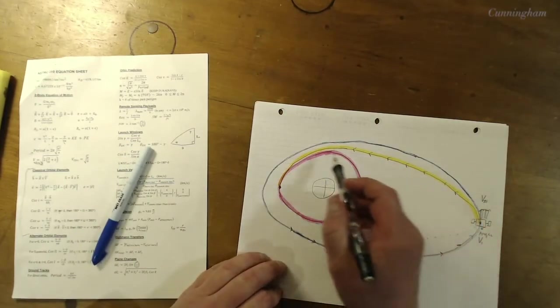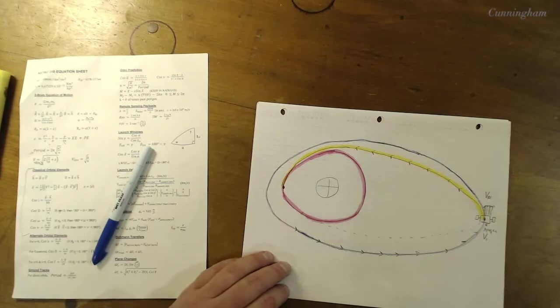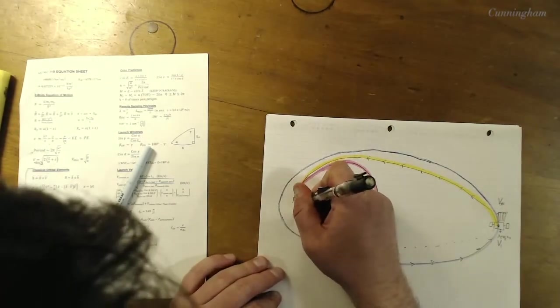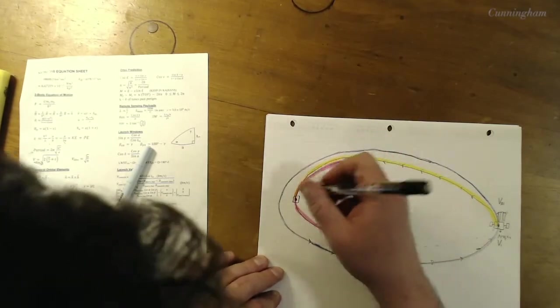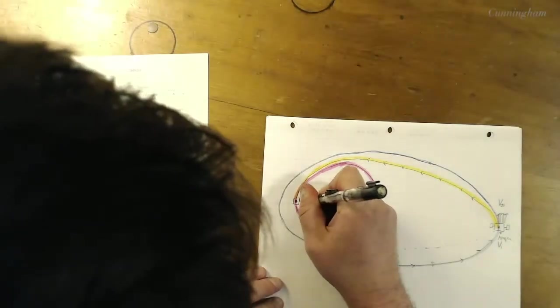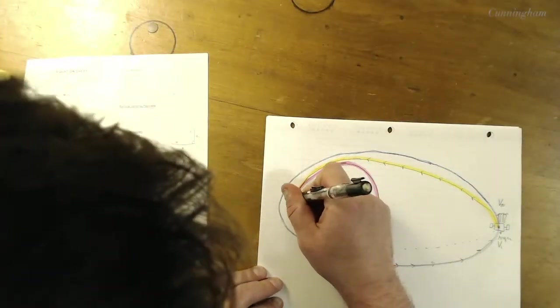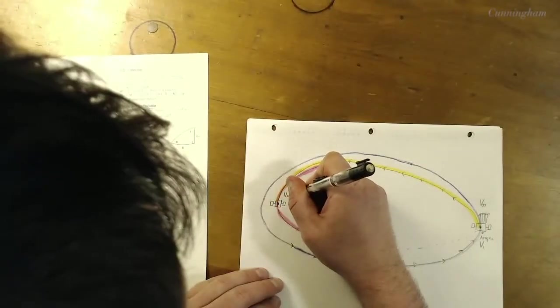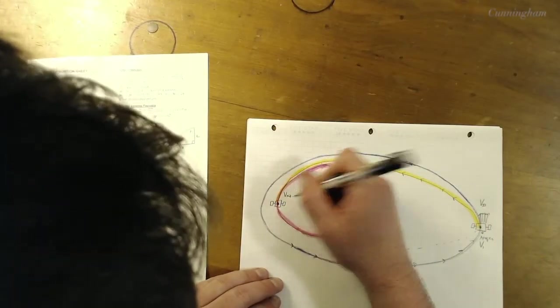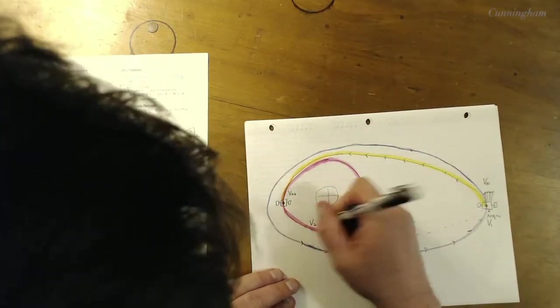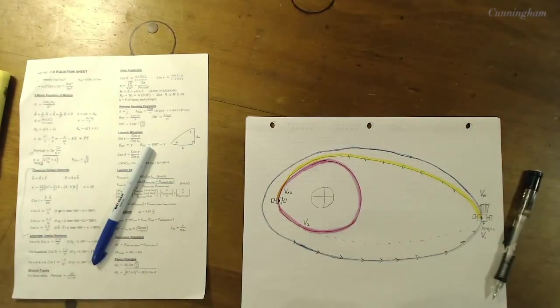So let's say the velocity right before we do our burn I'm going to call v1, and the velocity right after we do our burn I call vt1, it's supposed to be a little cursive t, v sub t1. And then the satellite is going to travel for a little bit, we're actually going to figure out how long, and then it's going to do another burn in here closer to the earth.